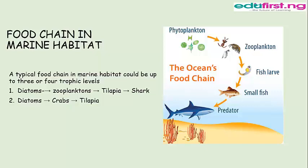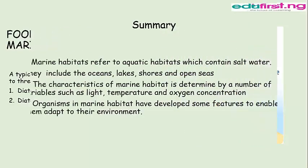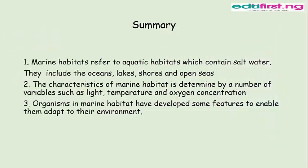What have we learned today? Marine habitats refer to aquatic habitats which contain salt water. They include the oceans, lakes, shores, and open seas. The characteristics of marine habitat are determined by variables such as light, temperature, and oxygen concentration. Organisms in marine habitat have developed adaptive features to enable them to survive in their environment.